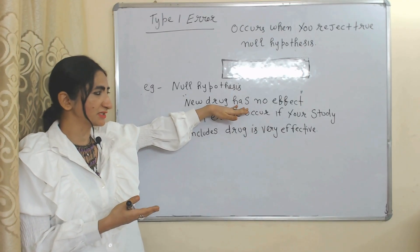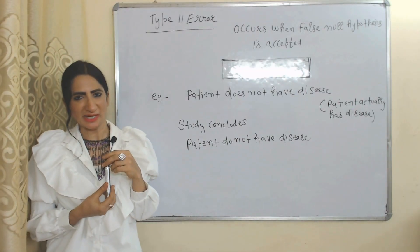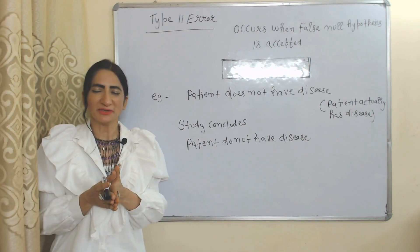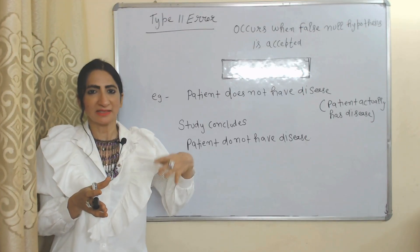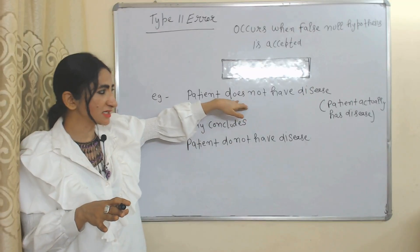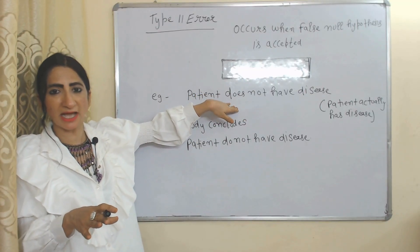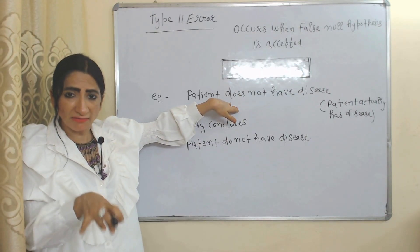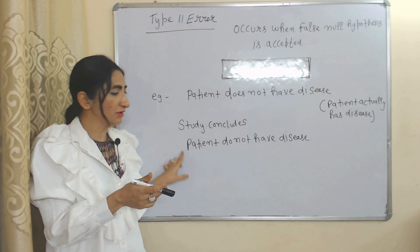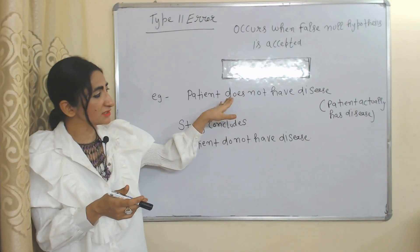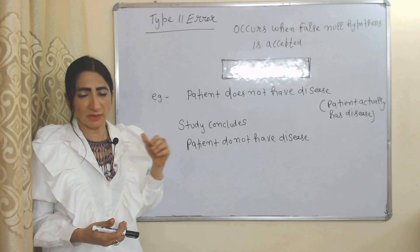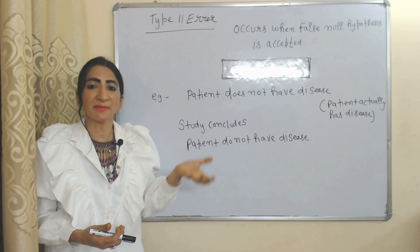Type 2 error occurs when a false null hypothesis is accepted. For example, 'patient does not have any disease' — this is a false null hypothesis because in reality the patient has a disease. Your study must reject this hypothesis, but your study concludes the patient doesn't have any disease. That means your study accepts a false null hypothesis, so type 2 error occurs.